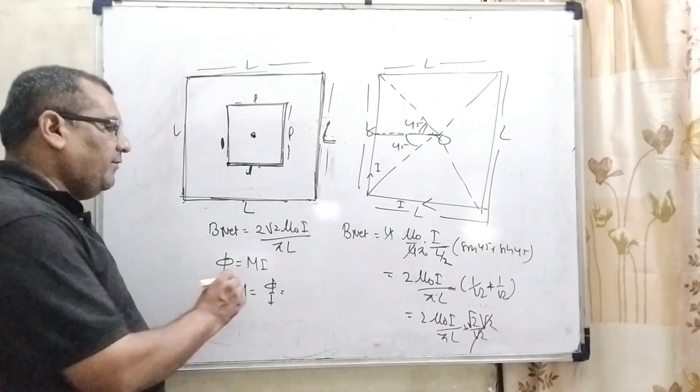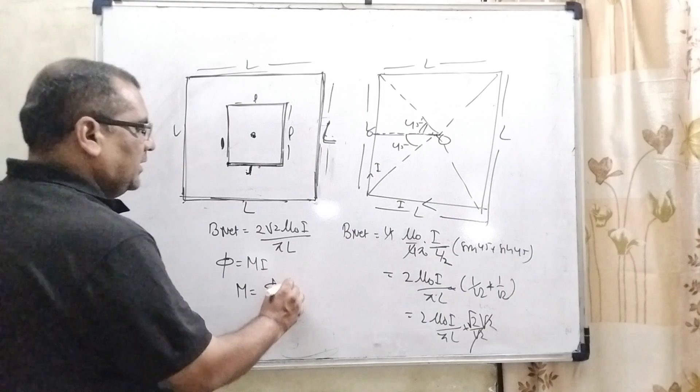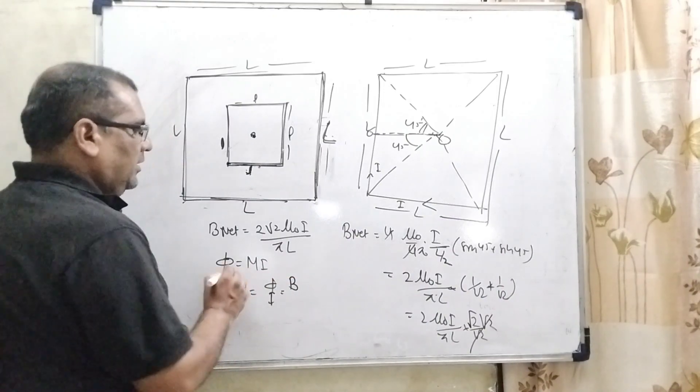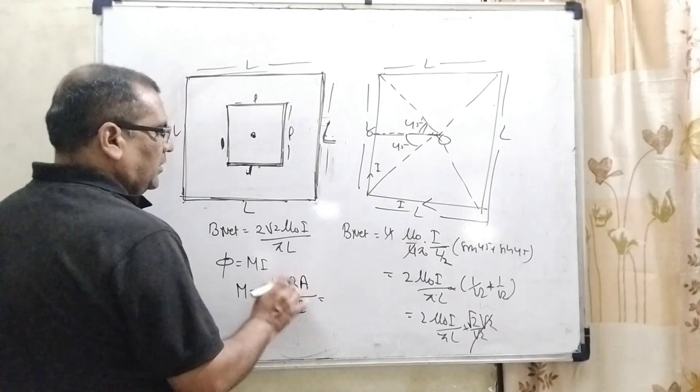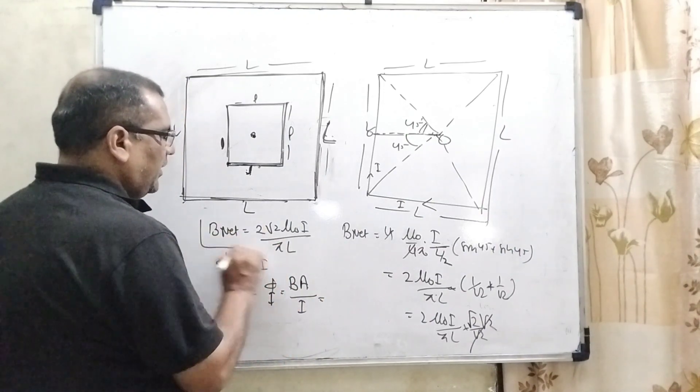What is the formula of magnetic flux? That is B times area, magnetic field times area upon I. What is magnetic field? We have already found out.